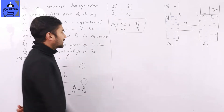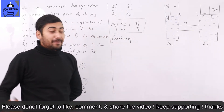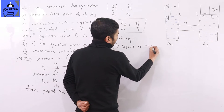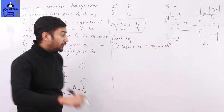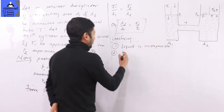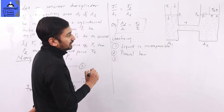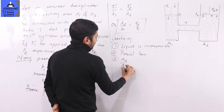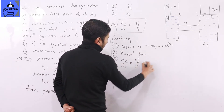In conclusion, the working principle relies on two key points. First, liquid is incompressible. Second, if pressure is exerted on a liquid enclosed in a vessel, it is transmitted equally in all directions. Therefore, the ratio of cross-section areas A1 and A2 equals the ratio of forces F2 and F1.